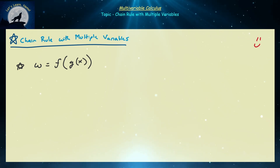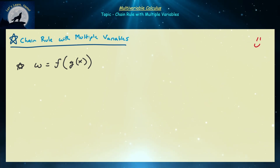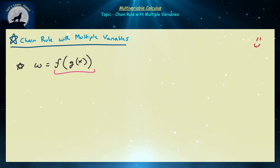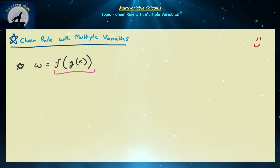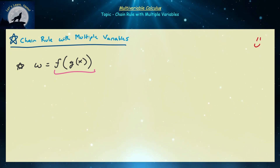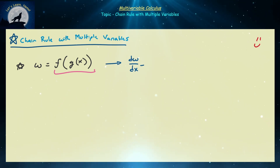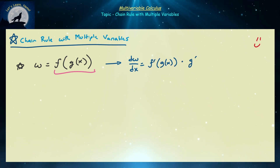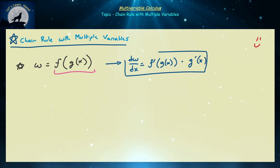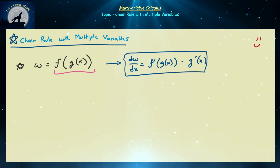So f is a function of x, but x has to go through g before it gets to f. We usually call this a composition function, and we want to know how w is changing with respect to x — that is, how is f changing with respect to x? First f has to change with respect to g, and then g directly changes with respect to x. In single variable calculus, we write this as dw/dx = f'(g(x)) · g'(x), and that's what we memorize for the chain rule.